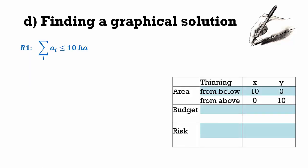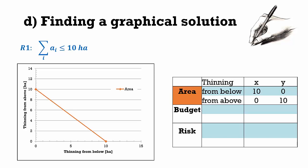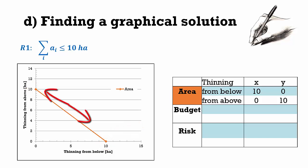Our first restriction is the maximum area size of 10 hectares. If we carry out thinning from below on the entire 10 hectares, no area is available for the other thinning type, and vice versa. These two findings give us two points in our coordinate system: one at 10 on the x-axis and one at 10 on the y-axis. Connecting those two points defines a solution space containing only combinations that make up a maximum of 10 hectares.